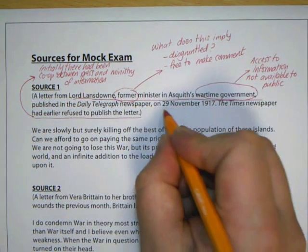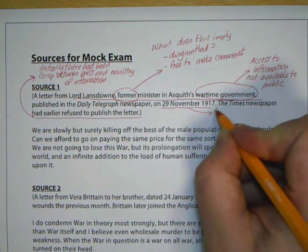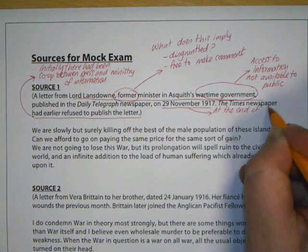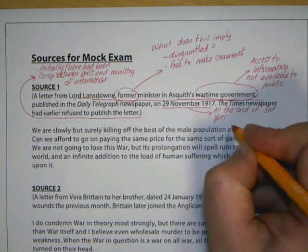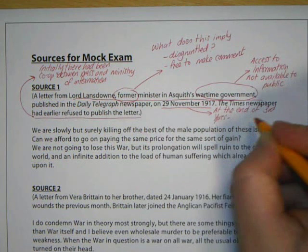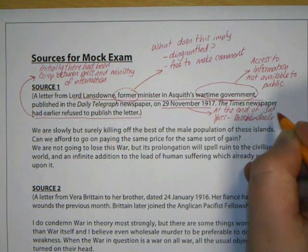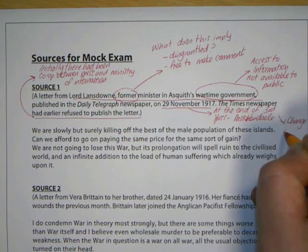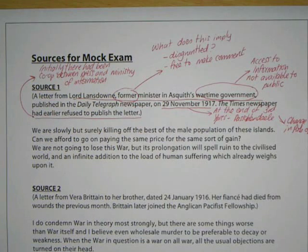Could it be something to do with the date? The date is 29th November 1917 — at the back end of 1917, which means it's at the end of the Third Battle of Ypres. Passchendaele was a really good example of where Haig got it wrong. Could it be that this minister and the newspapers had finally lost their patience with the cooperation they were offering? It could also suggest that there was a general change in public opinion as a result.